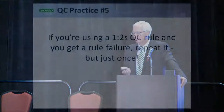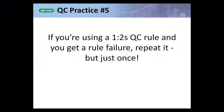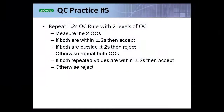QC practice number five. If you're using a 1-2S QC rule and you get a rule failure, repeat it — but just once. The rule I'm describing is this: measure both QCs. If both are within plus or minus 2SD, accept. If both are outside plus or minus 2SD, reject. Otherwise, repeat both QCs.